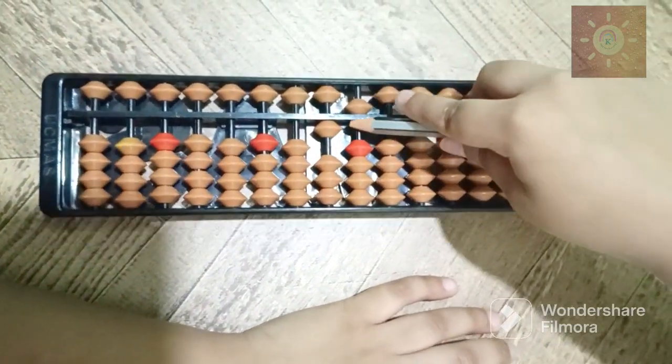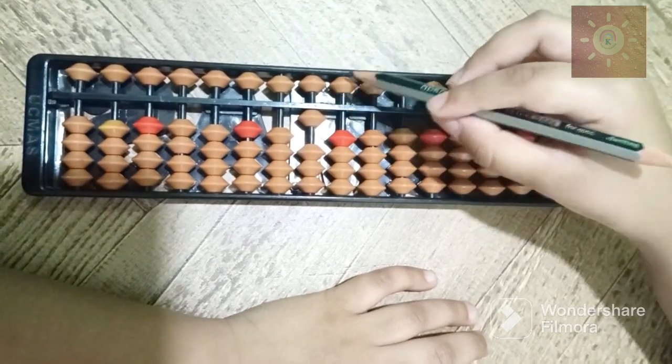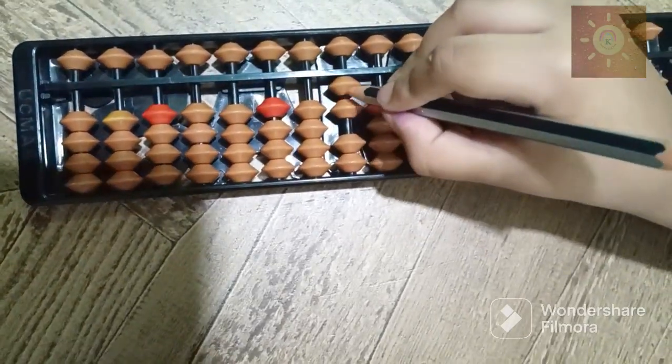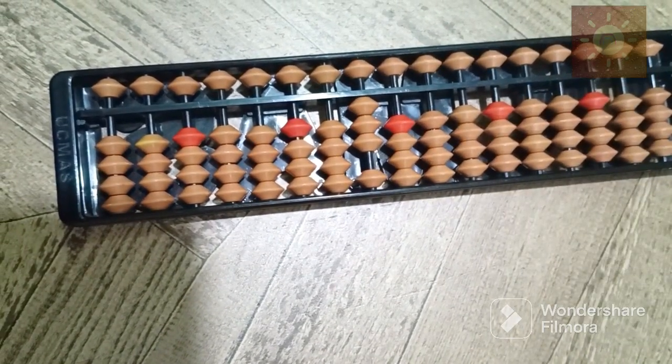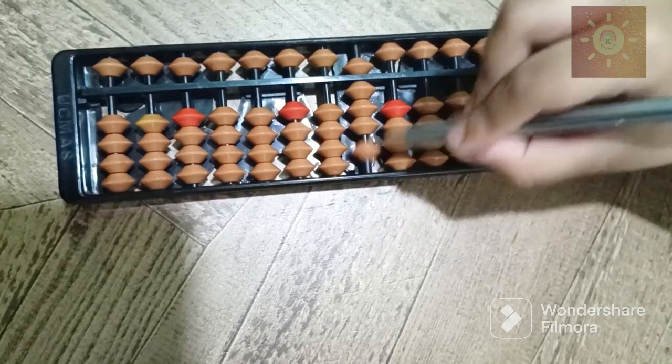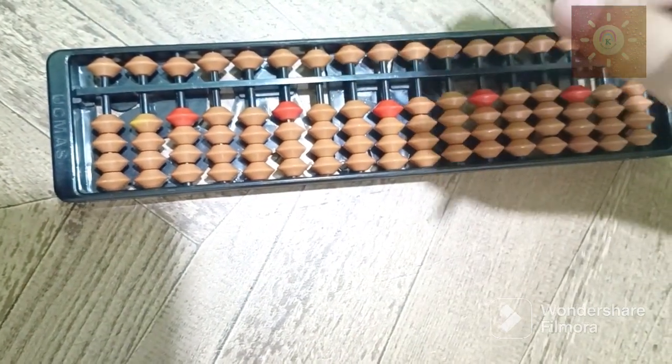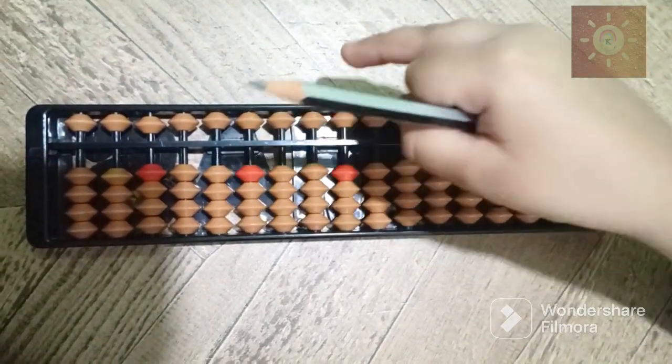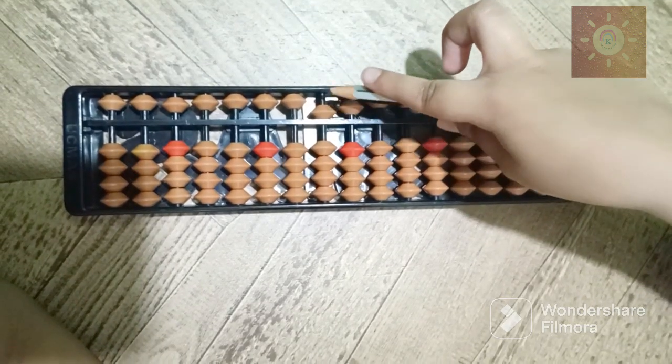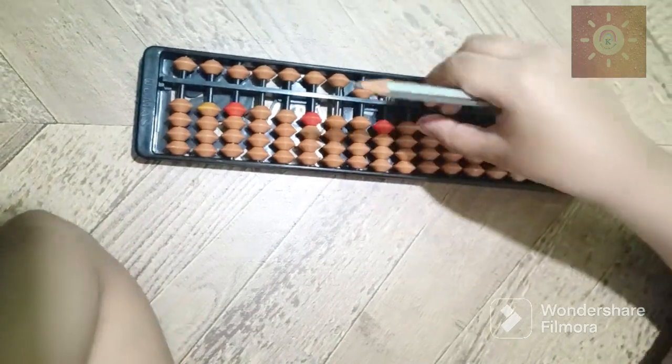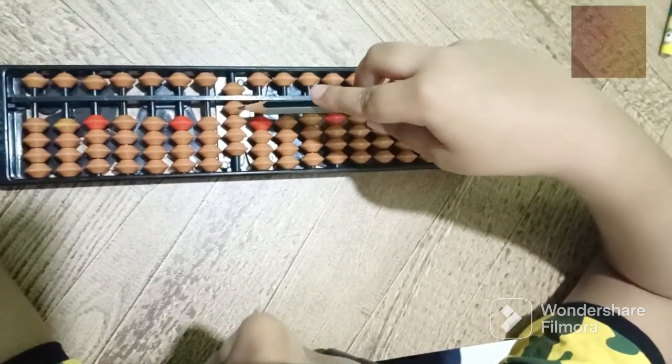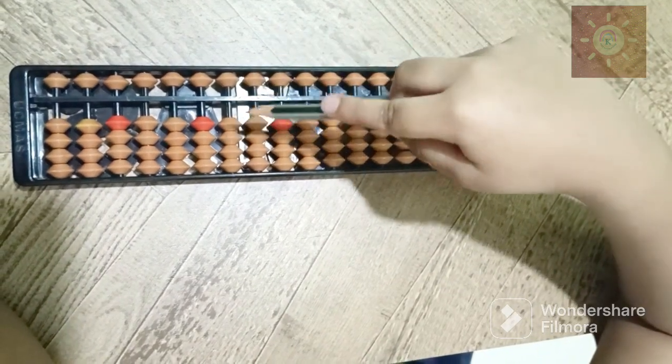Now how to add twenty? Minus nine and finally plus ten. See, this is twenty, this is thirty, forty, fifty, sixty, seventy, eighty, ninety. And finally, one hundred. This is fifty in the tens yard. Now sixty, seventy, eighty, ninety. How to add hundred? Minus ninety, plus hundred.